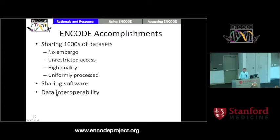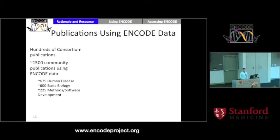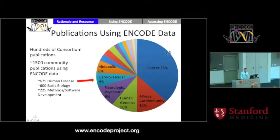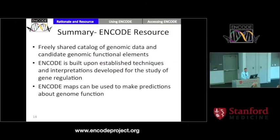We're also sharing the software that we've either produced or used in the project so others can use it and to make things transparent. We're working with other projects and individual investigators to make the data more interoperable, talking about standards and how things are communicated. Among what we share are ENCODE publications — hundreds from the consortium — but perhaps for this audience more important, there are publications from outside ENCODE that have used ENCODE data, covering a wide spectrum of human diseases and basic biology, which attests to the translational value of the resource.